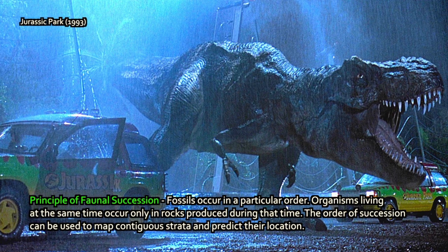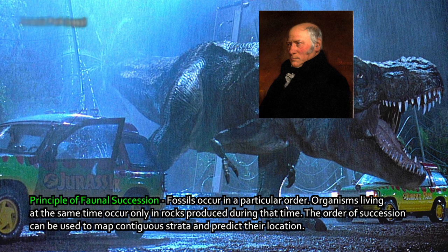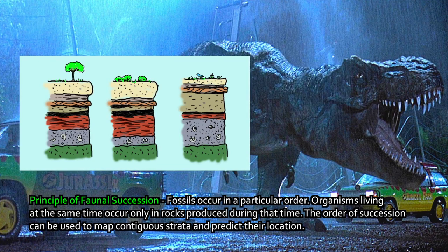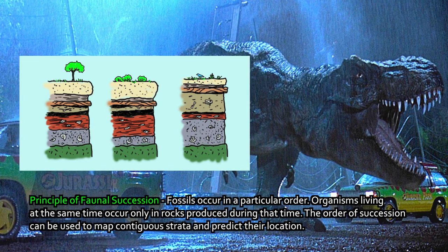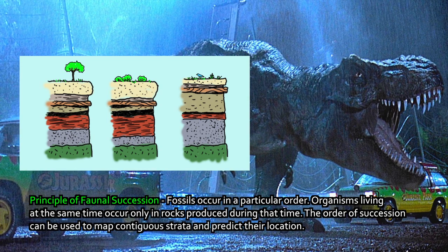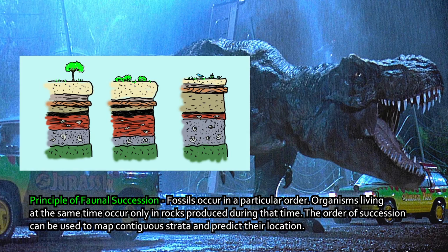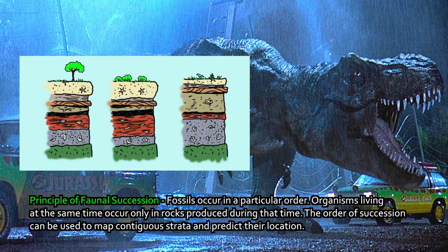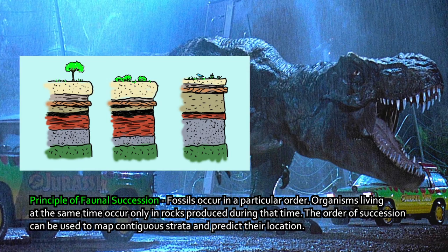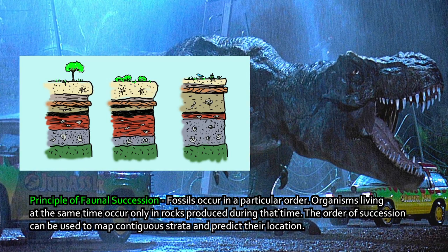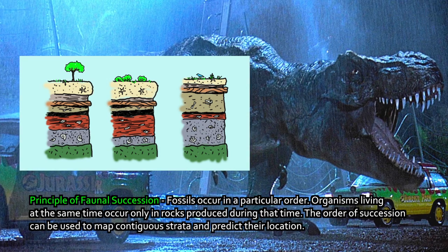The principle of faunal succession — I hinted at this earlier when I was talking about Smith's discovery — states that fossils in layers always occur in a particular order that never gets switched around. This is basically what the principle of faunal succession says. Organisms only live at certain times, and organisms all living at the same time are going to only leave their traces in rocks produced at that time. They're living and dying during the period that their carcasses are being stored away in the rocks. So faunal succession basically just records that.